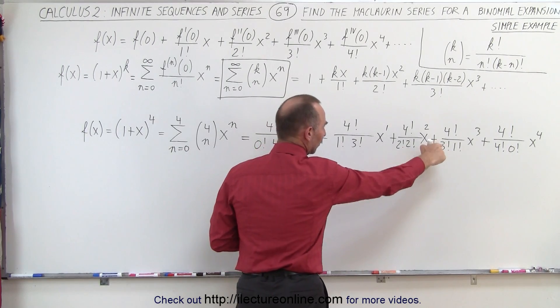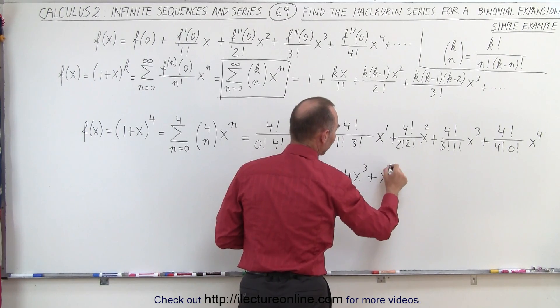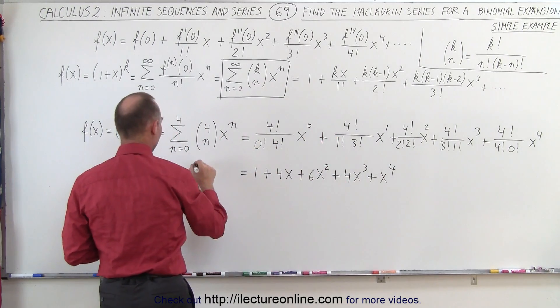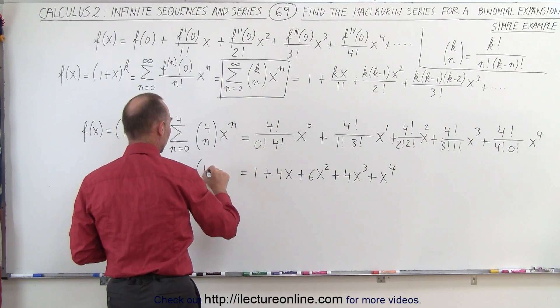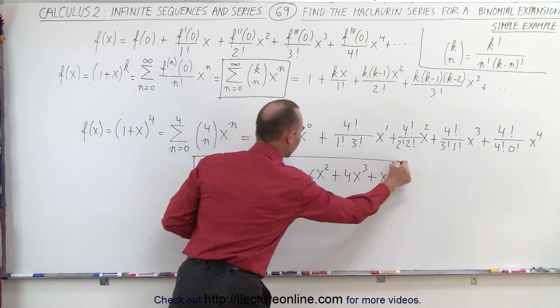Here again we get 4x cubed, plus 1 times x to the 4th power. So you can see that the binomial expansion of (1+x) raised to the 4th power can be written as this expansion.